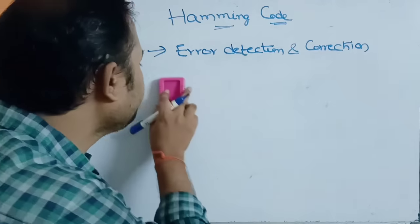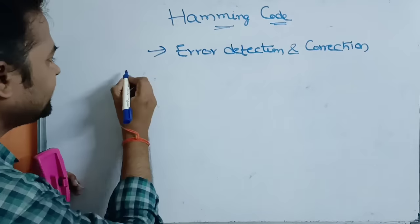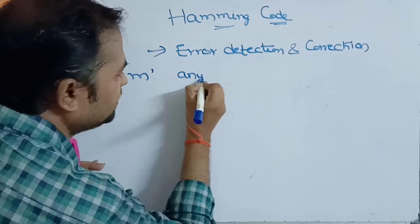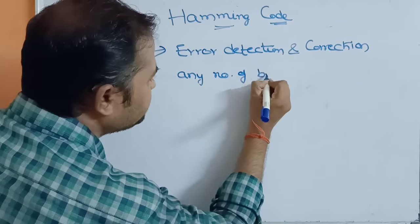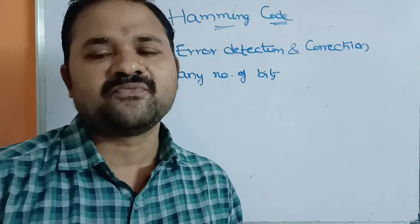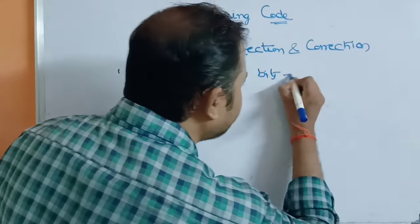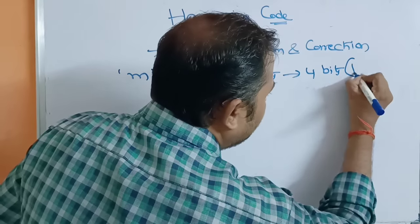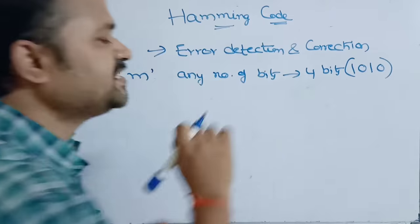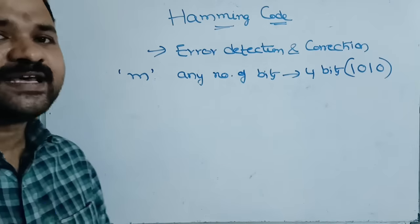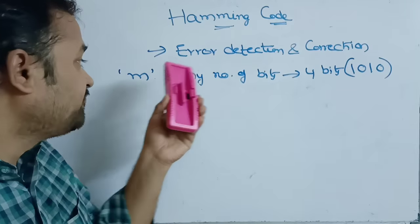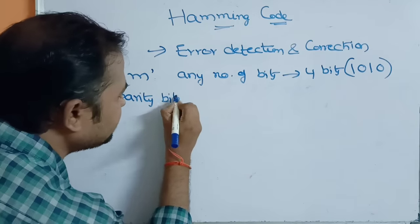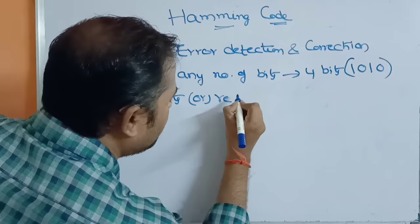Now let us see how we can implement the Hamming code approach. Let us assume the message is represented by m, where the message may contain any number of bits — 4, 8, 16, 32, or 64 bits. For this simple example, I am taking the message size as 4 bits: 1010. In this approach, the sender sends the message along with parity bits, also called redundant bits — some extra bits added to the message.